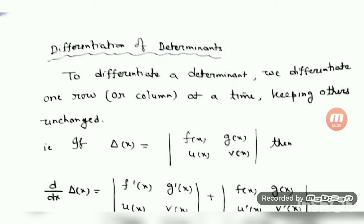That means, if you want to do the differentiation of a determinant, first you have to differentiate any row or column using the usual rule, but in that case you have to keep the other row or column as it is. Then you have to do the sum of this determinant with the next: differentiate the second row or column, keep the others as it is, and take the sum. Like that, we have to proceed.